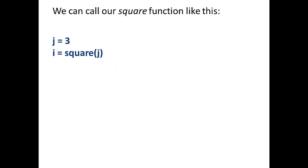So we can call our square function like this. Let's take a variable j and set it equal to 3. And then we'll call the square function on j and assign the return value to i. So when we do this, we assign x the value of 3.